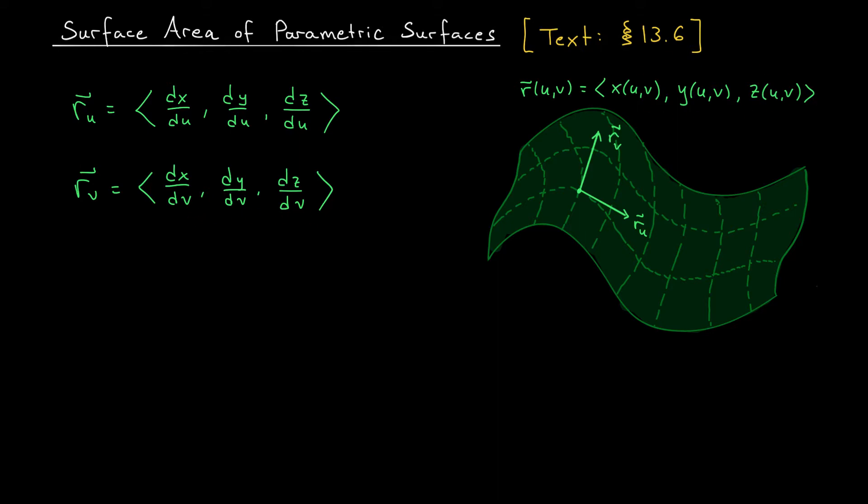Now it turns out that ru and rv can also be used to compute something else that's very important when talking about surface integrals. That's our next topic. They can be used to compute the surface area of one of these parametric surfaces. Notice that the total surface area is really the sum of the areas of each of these patches. So if we can approximate the area of a patch, then we can add up our approximations to approximate the total area of this surface.